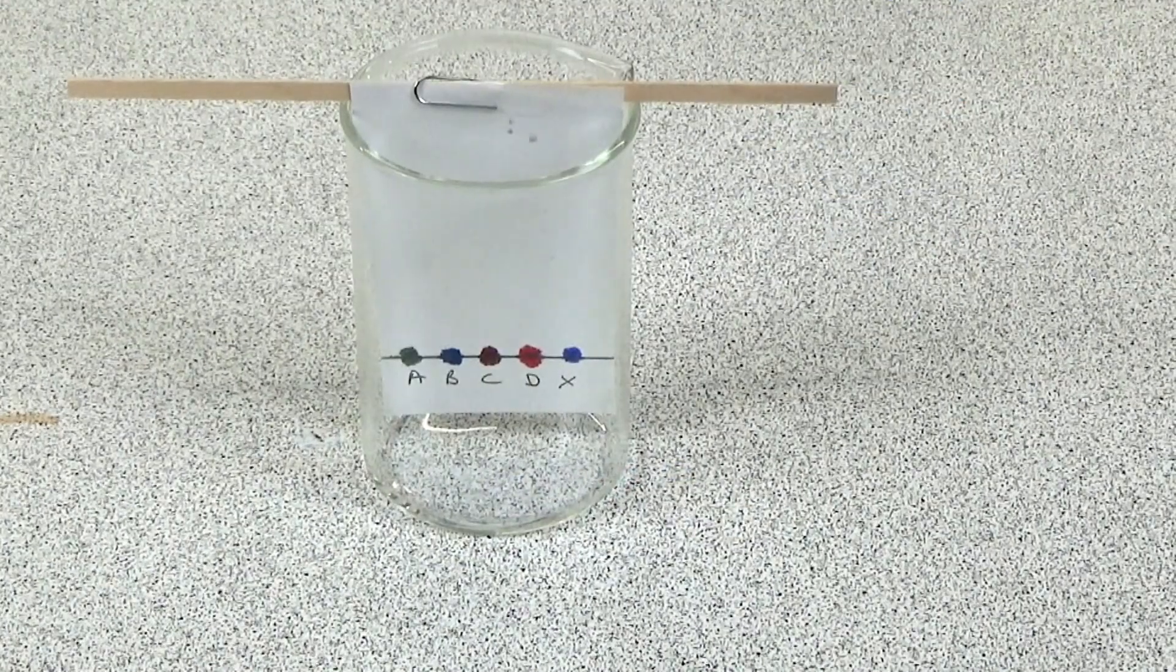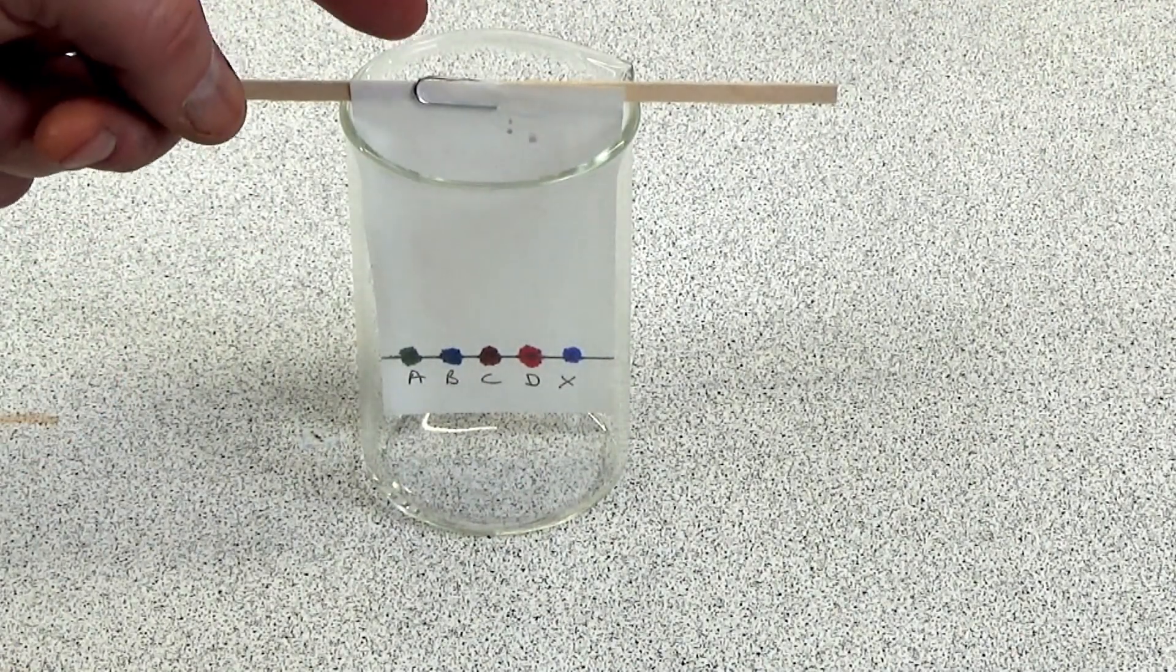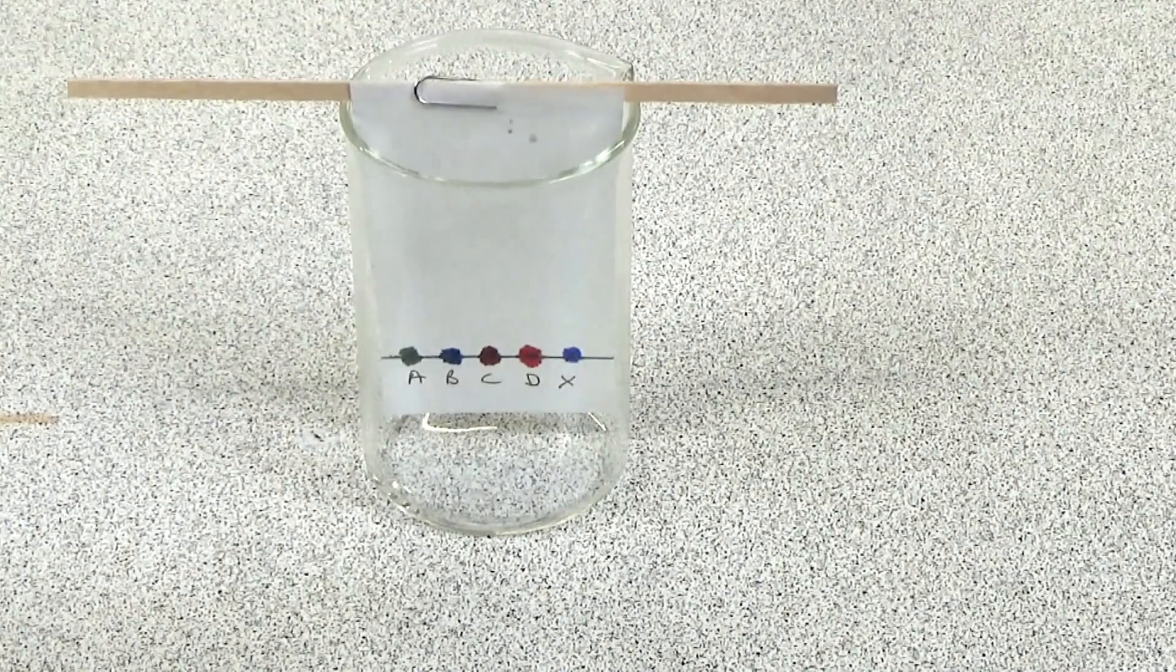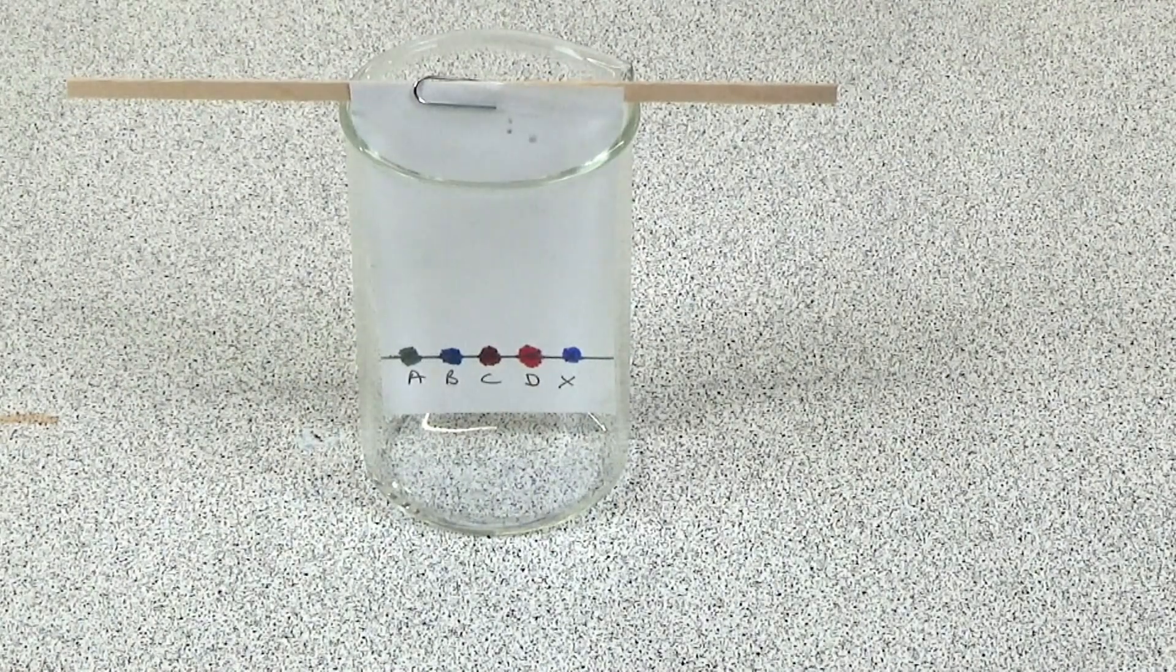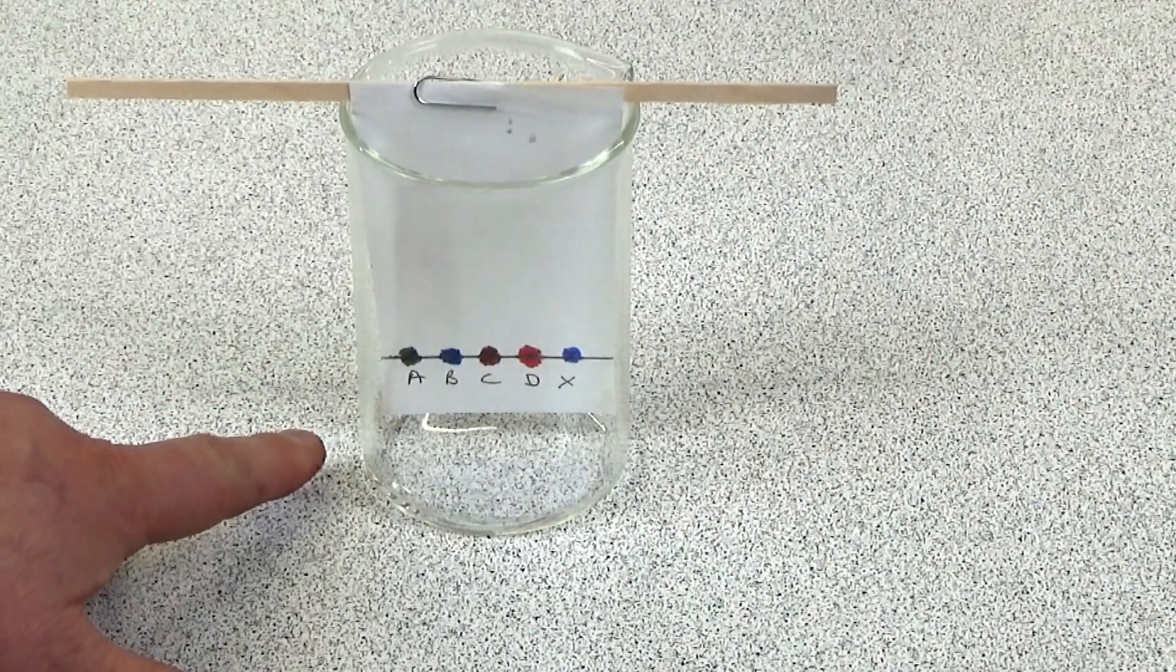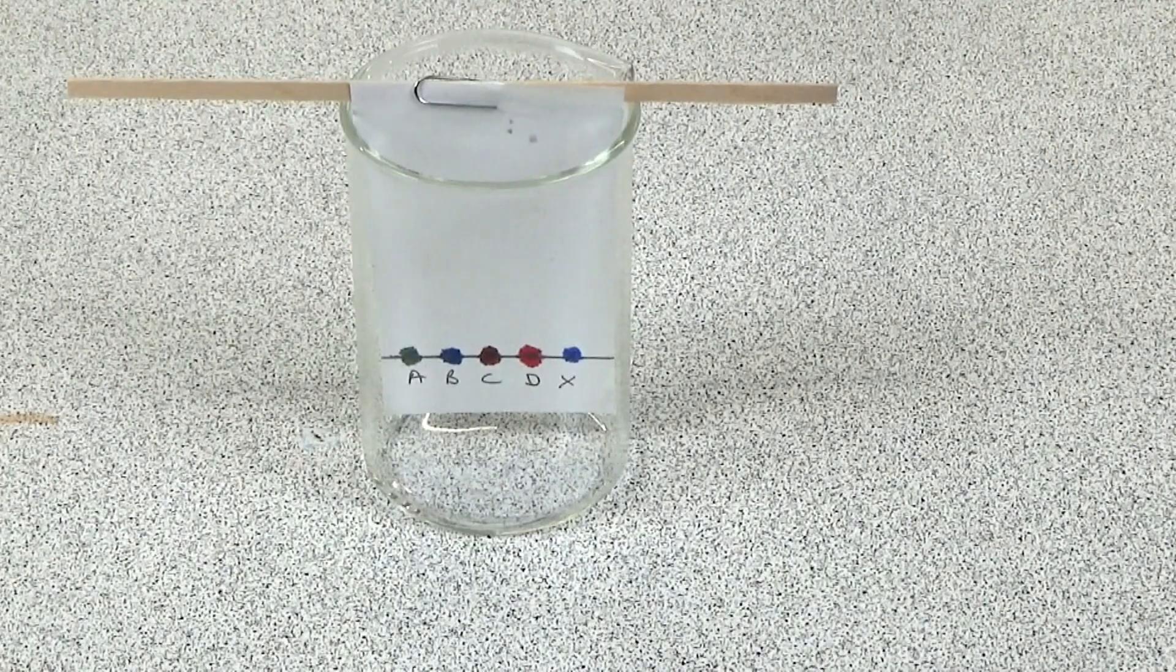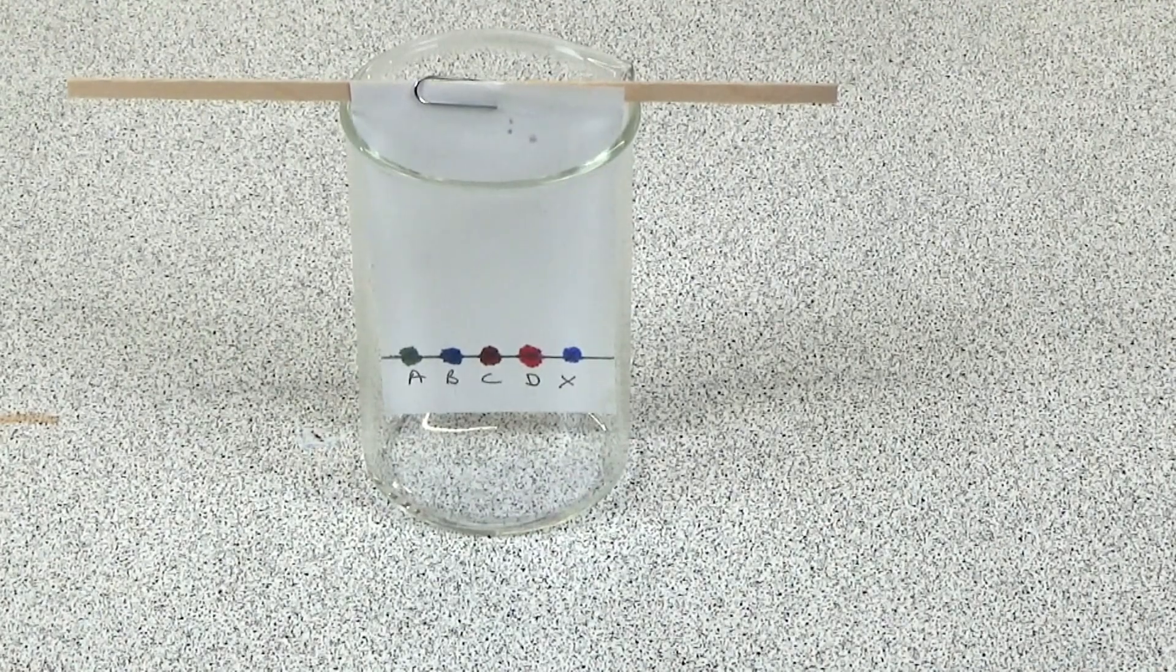Once those dyes are dry we then suspend the chromatography paper from a wooden splint and we secure it with a paper clip. You might need to wrap that around the splint a few times if it's a little bit too long but make sure that it's just above the bottom of the beaker so it's a good time for the students to measure the paper and get it right before we put the solvent in.